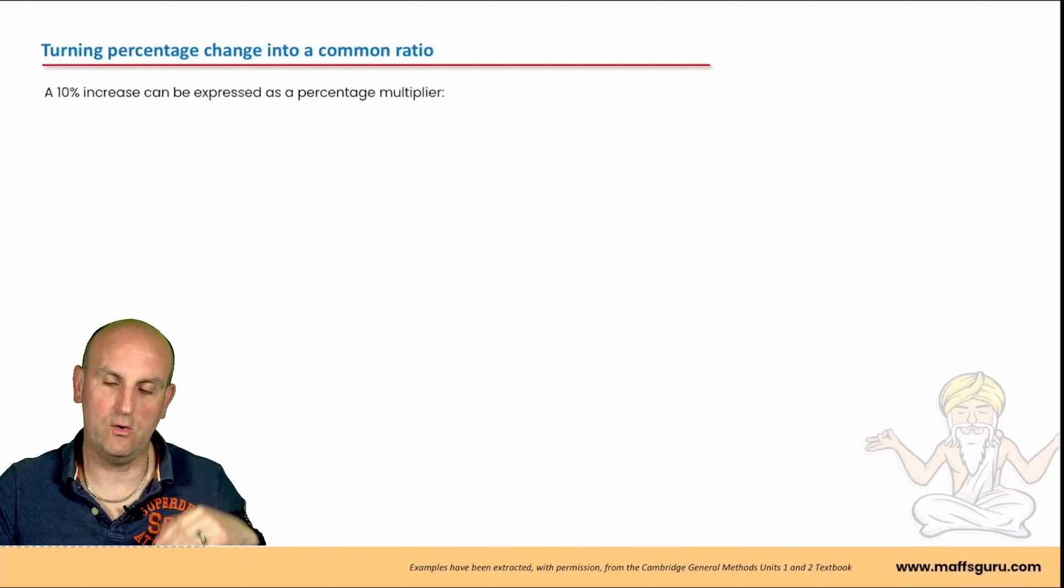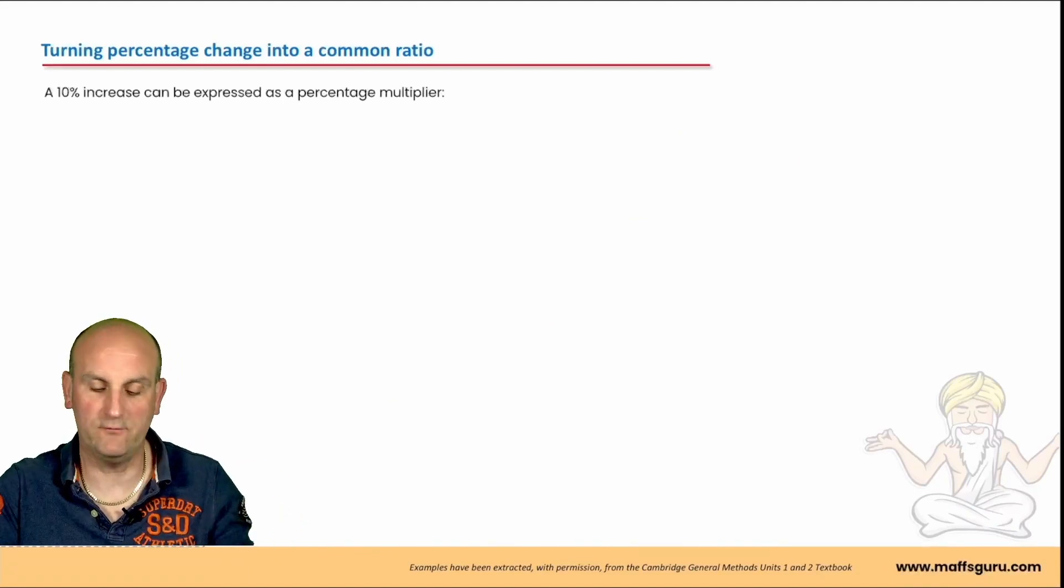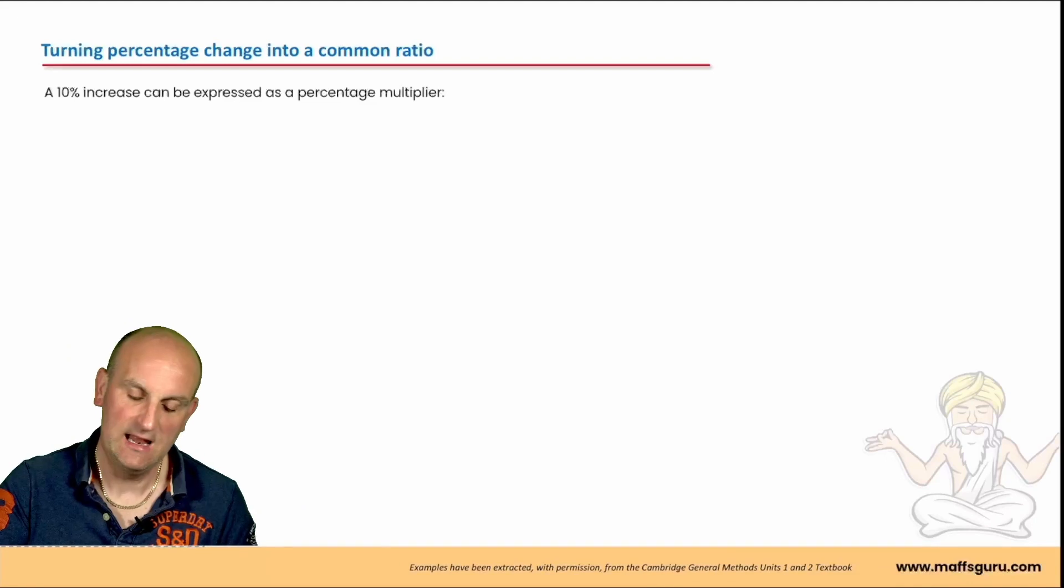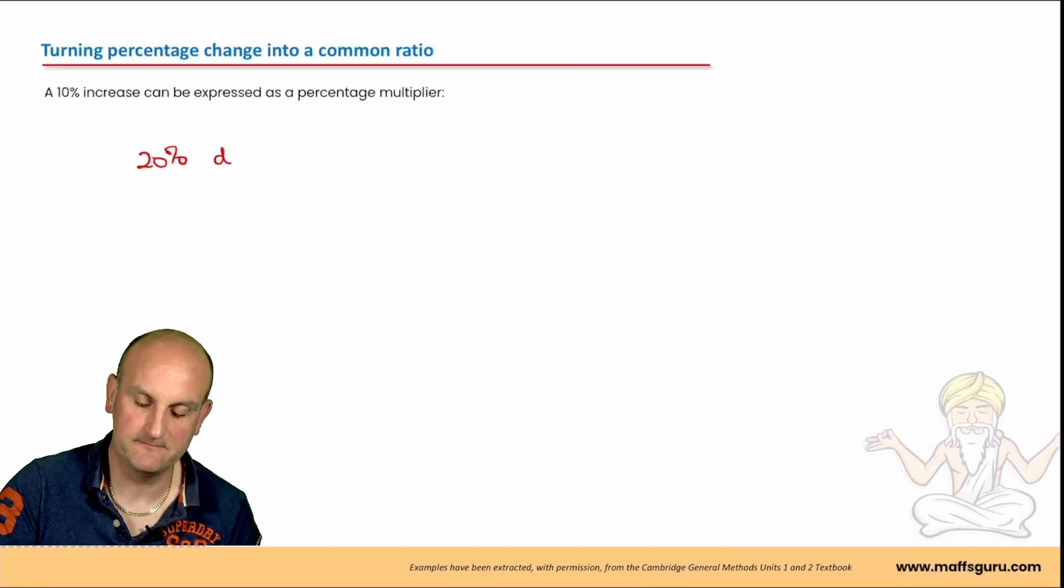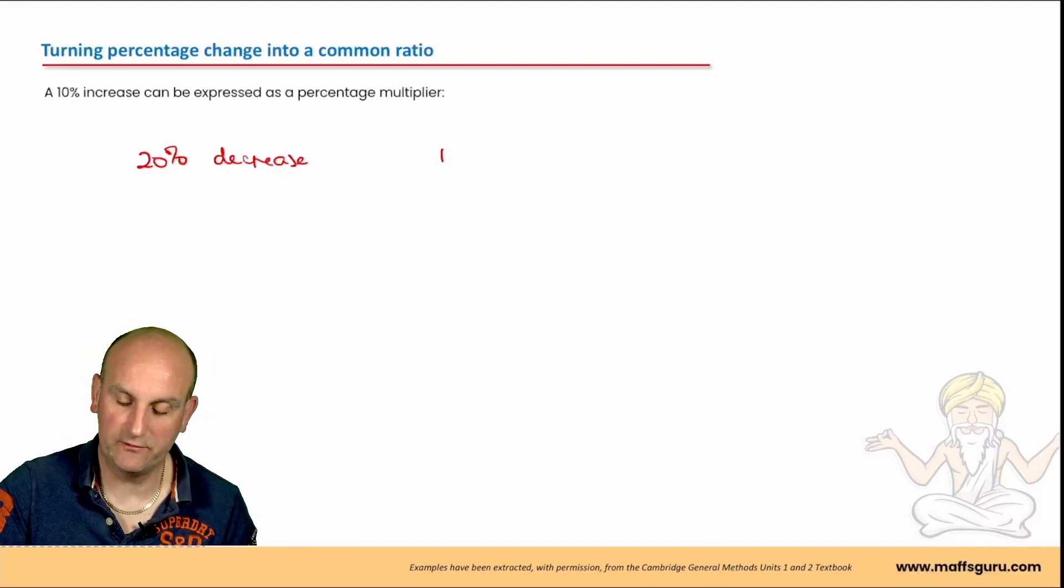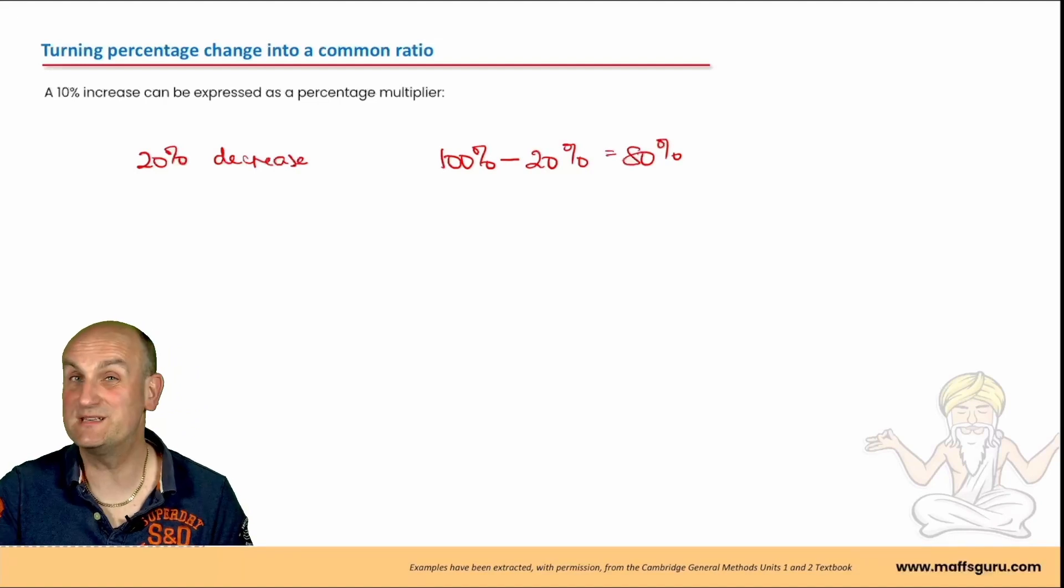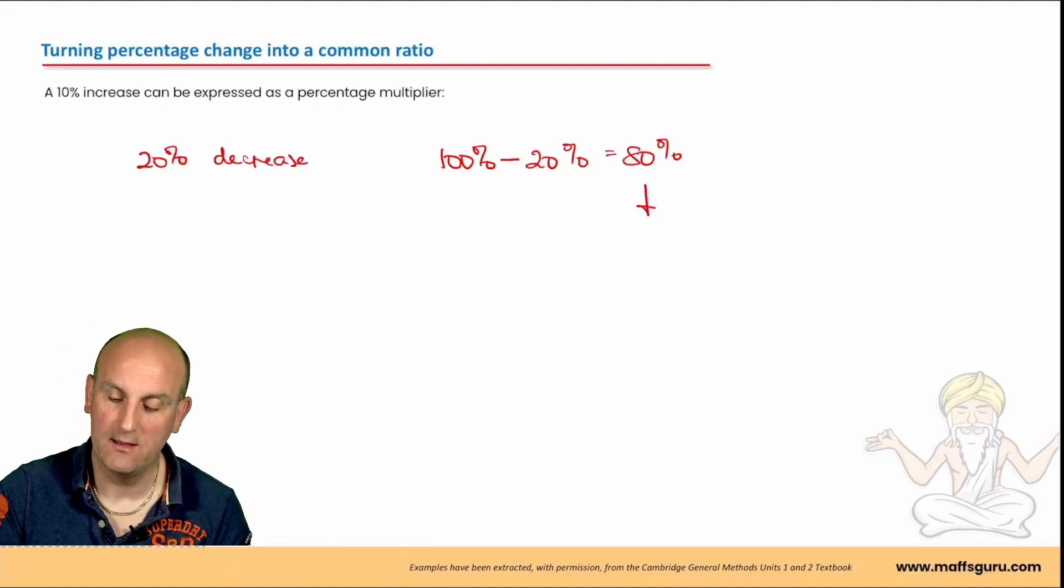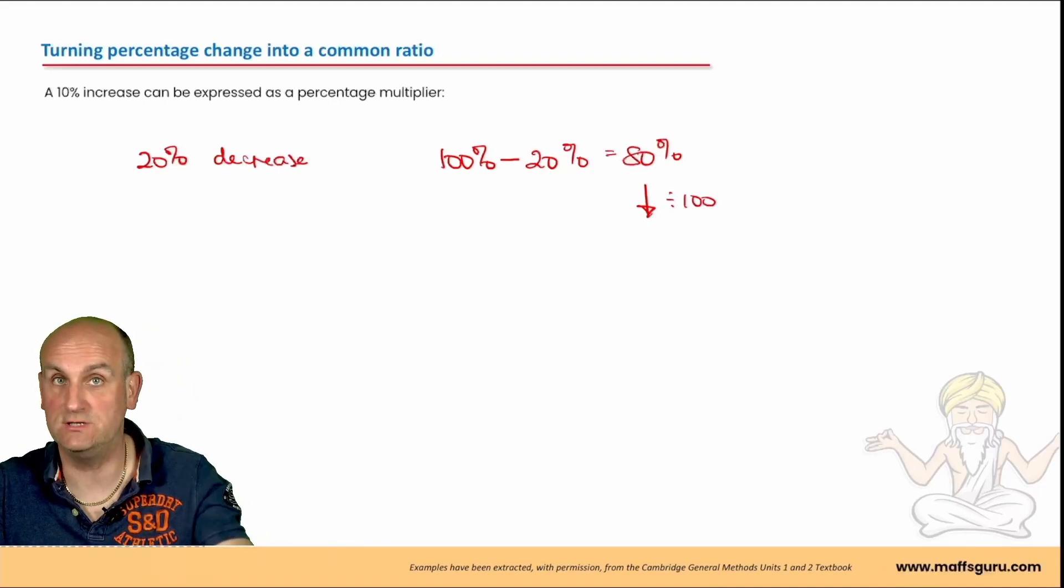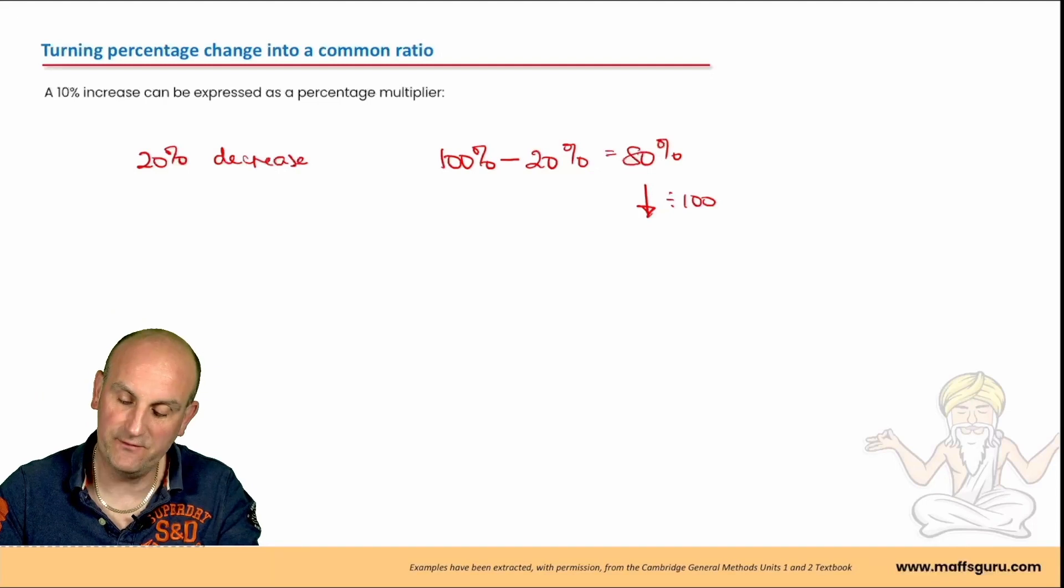What about a different one? Let's do a 20% decrease. How's that going to work? Well, again, we've started with 100%. I'm decreasing, so I'm going to take away 20%, which means I've got 80% of what I started with. That's a percentage. How do I go to a decimal multiplier? I divide by 100. Remember, these notes are all on MathsGuru.com. You can actually download them, sign up there for free. So 80 divided by 100 would give me 0.8.